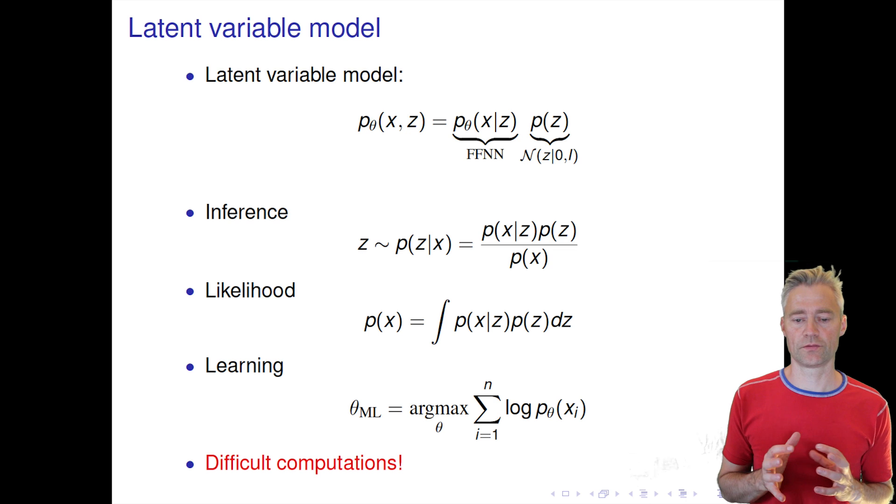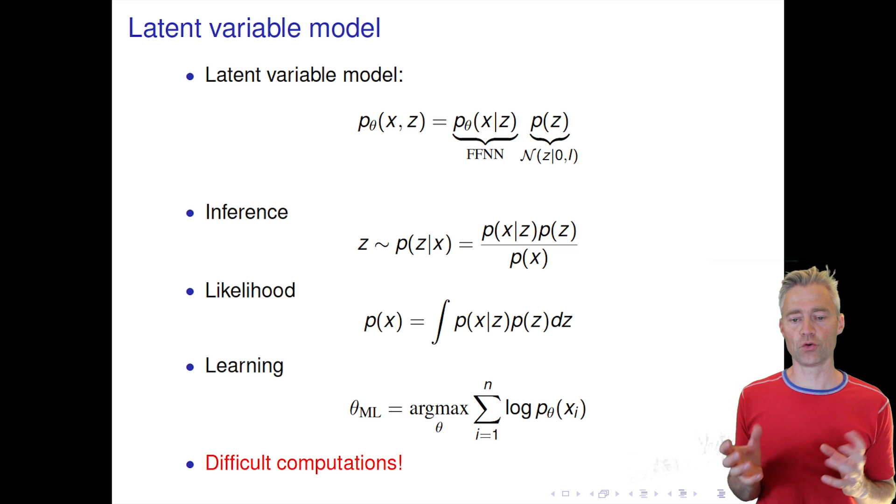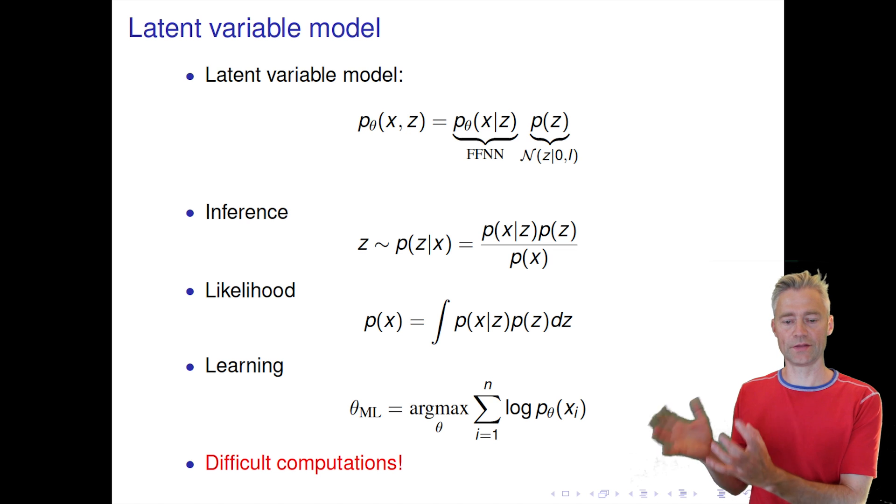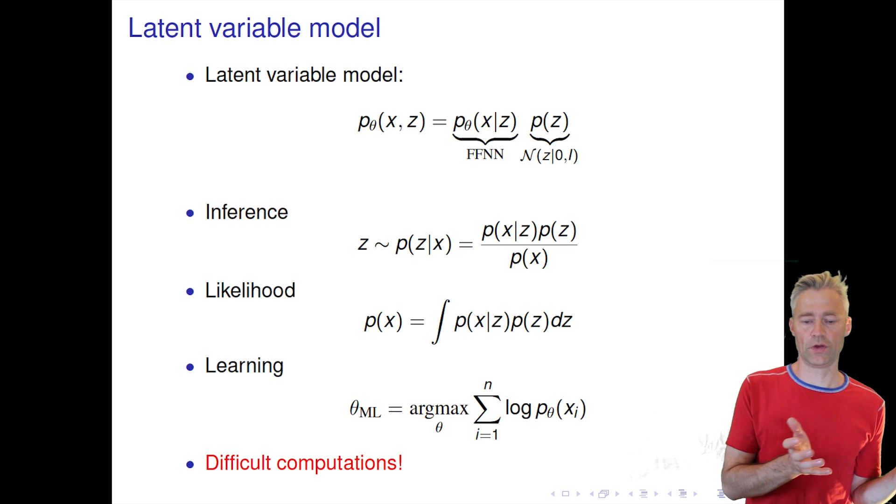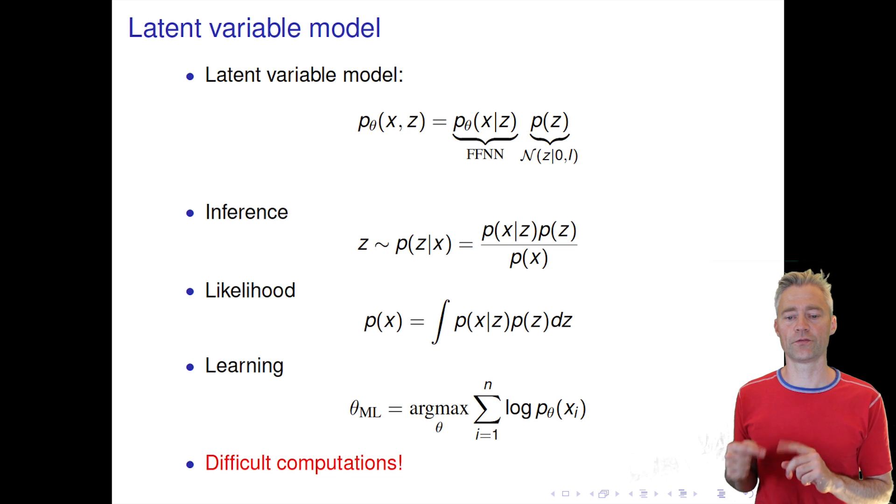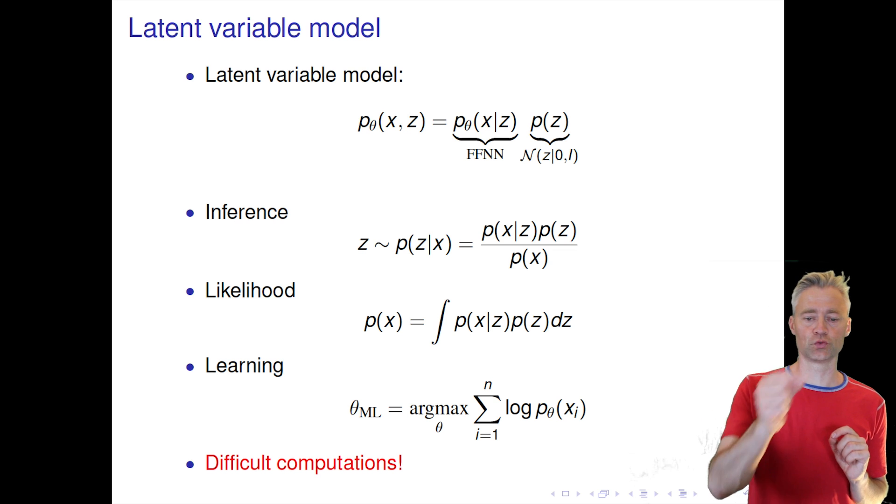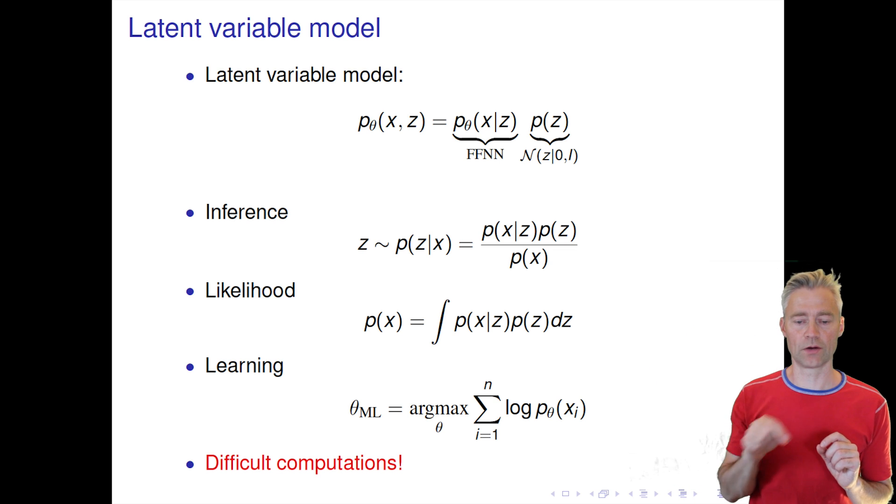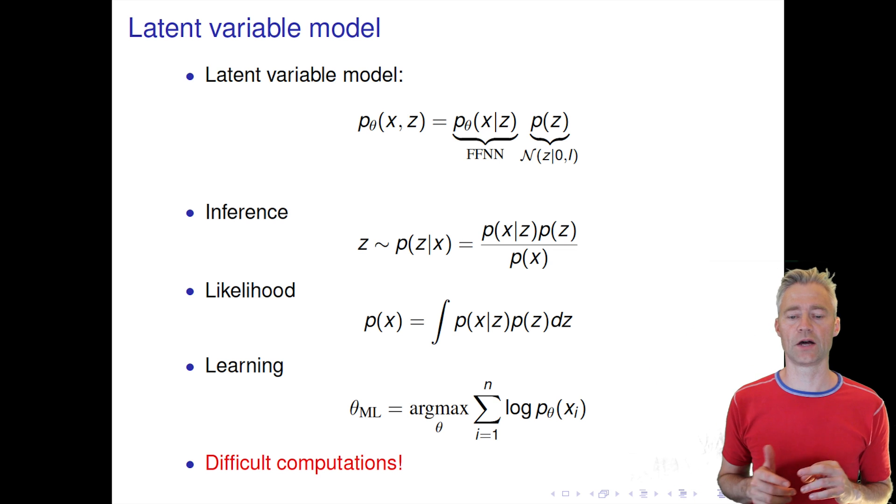So why is this model attractive? It is attractive because we can now learn very complicated mappings from a latent manifold to an observed data space. So you can imagine for example you have a latent manifold which has two dimensions and varying z will produce all the MNIST digits that you see by actually going around in this manifold. That was actually how we generated this movie I showed before.